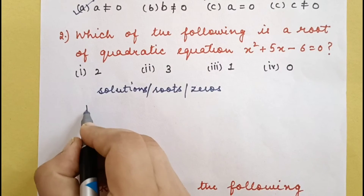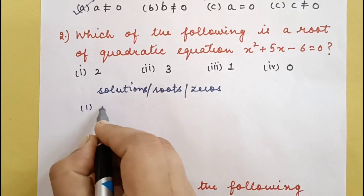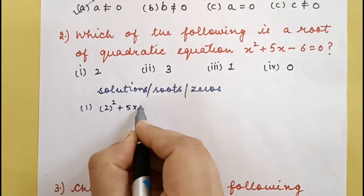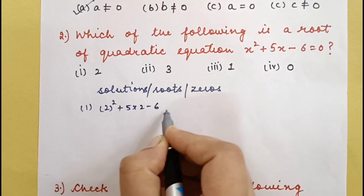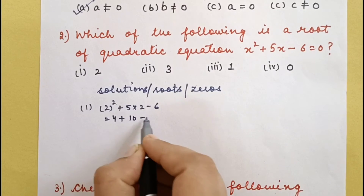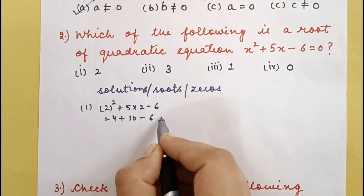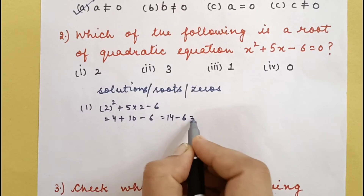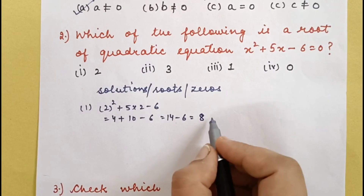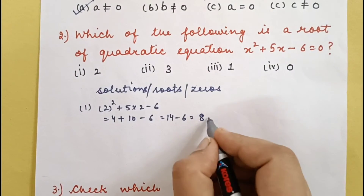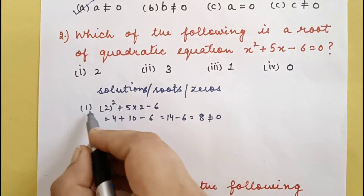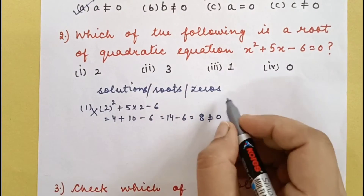First, put x = 2 into the equation: 2² + 5×2 − 6 = 4 + 10 − 6 = 8. The right-hand side is 0, and 8 is not equal to 0, so 2 is not the root.